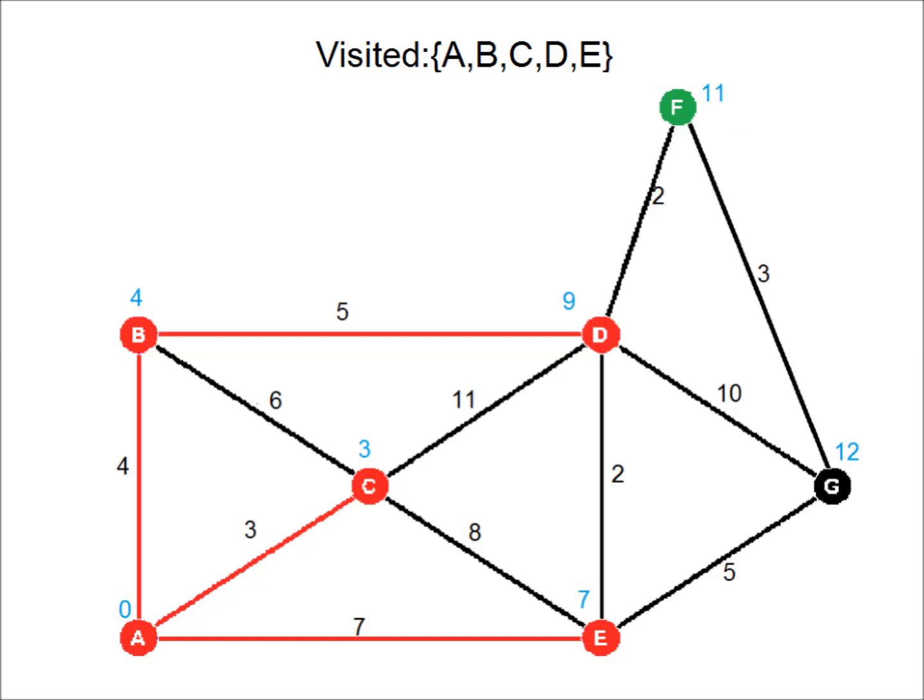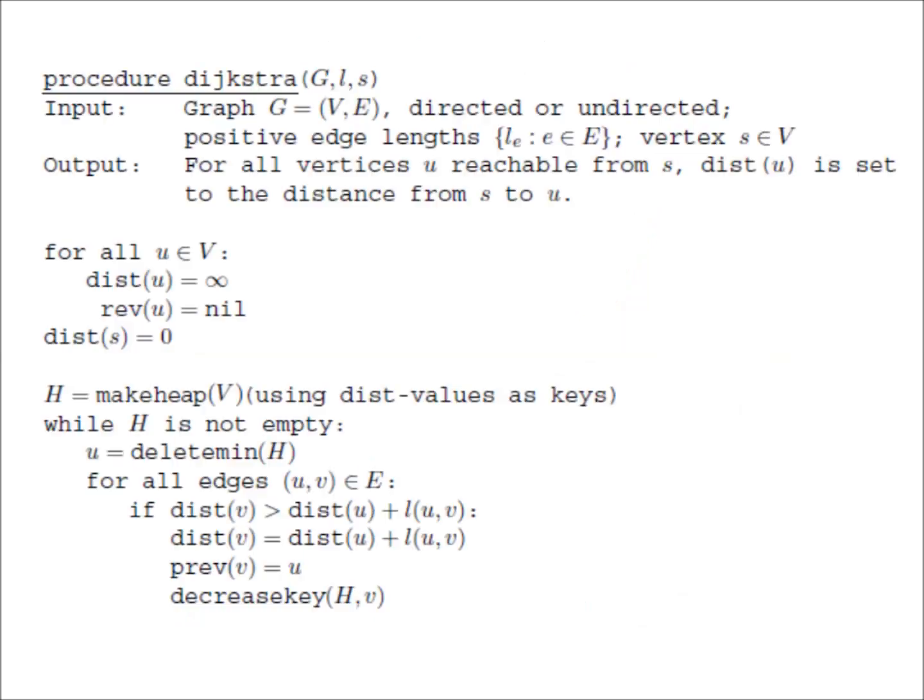Now the vertex with the lowest tentative distance is F. We visit F and add it to the visited set. Now we've reached the goal and we are done. The shortest path from A to F is A to B to D and then to F.